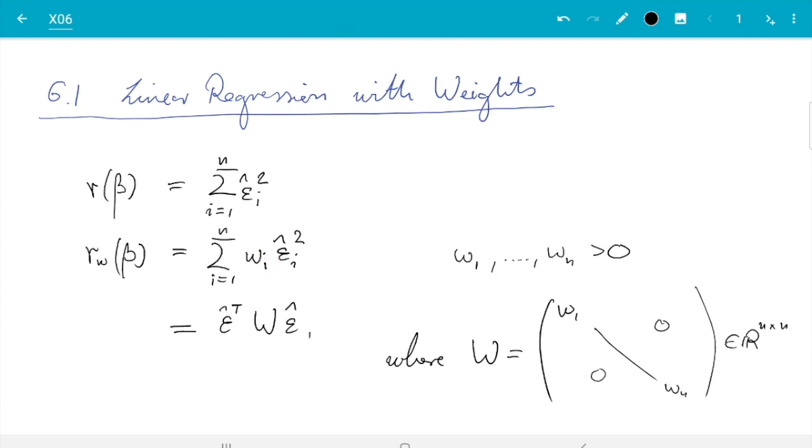Now we need to find the β which minimizes the thing. To make it possible, we need to see how does that depend on β. The answer is, as it was before, ε̂ is Xβ minus y.